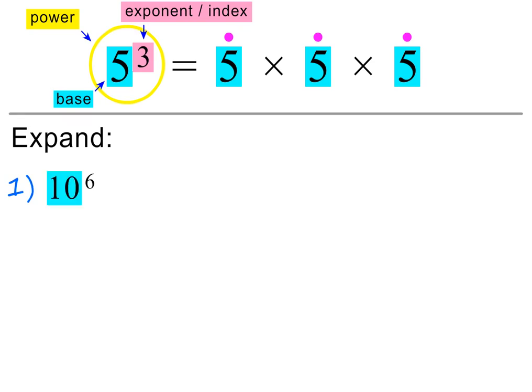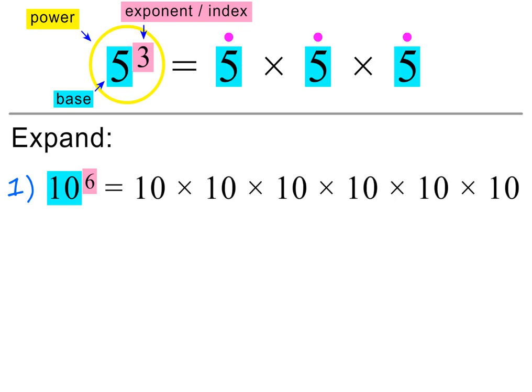The base is 10 and the exponent is 6, so we need to multiply 10 by itself 6 times.